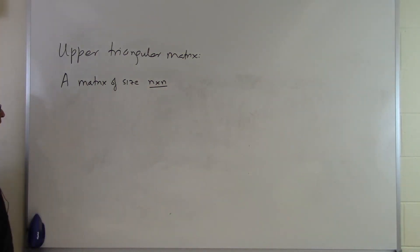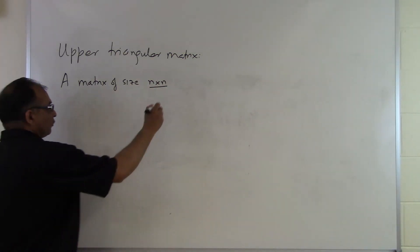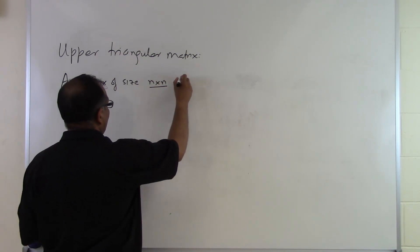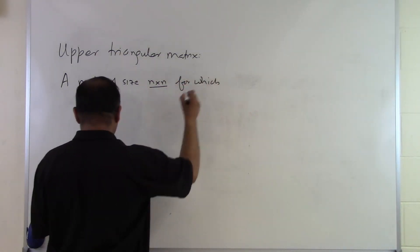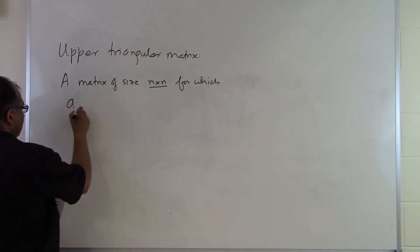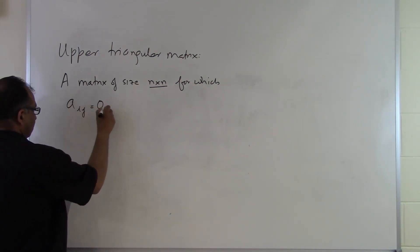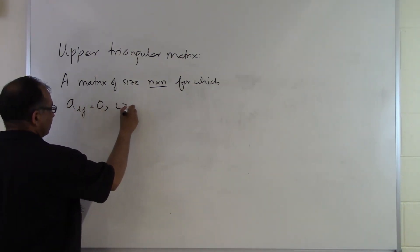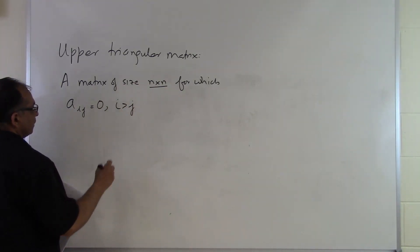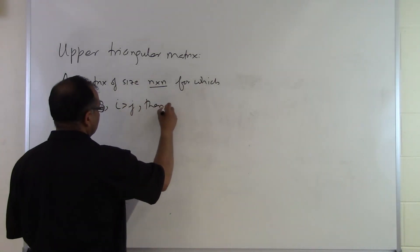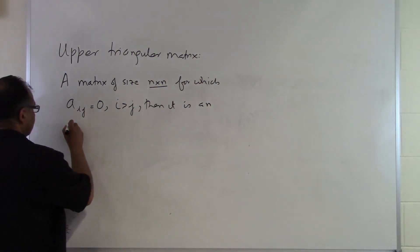so if it is of the order n by n, which means it is a square matrix. If you find that a_ij equals 0 for all elements in which i is greater than j, then it is an upper triangular matrix.